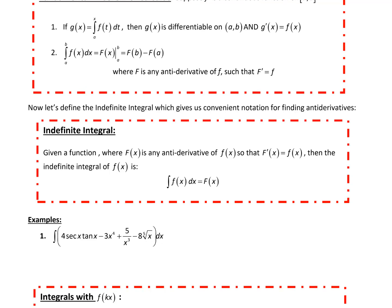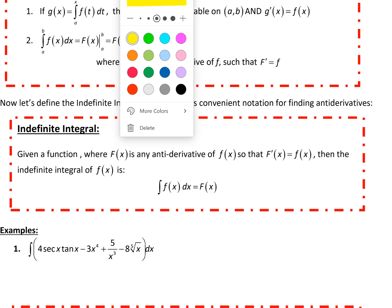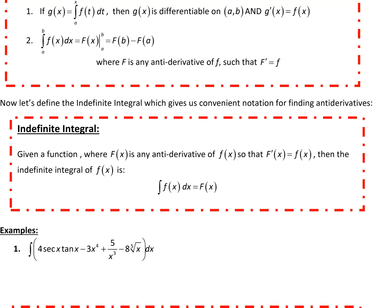The indefinite integral is defined by saying that if capital F of x is any antiderivative of little f of x — which means that F prime of x equals little f of x — then the indefinite integral, the integral of little f of x dx, is equal to its antiderivative F of x. That gives us some convenient notation that doesn't really add anything new, because we've been finding antiderivatives for several sections. This is the notation we're going to use when finding general antiderivatives.